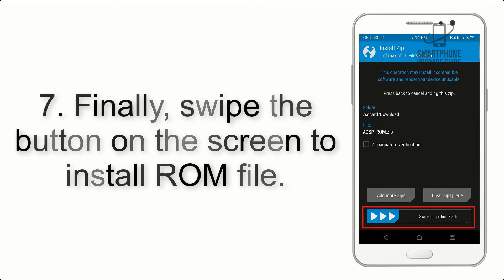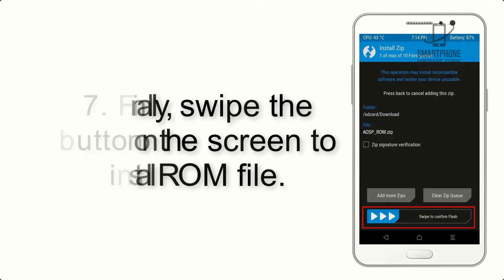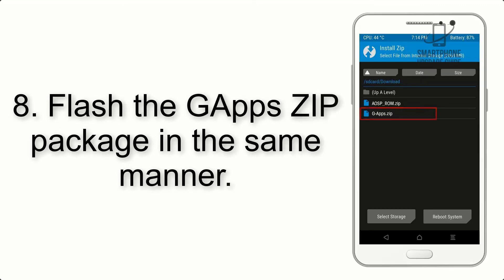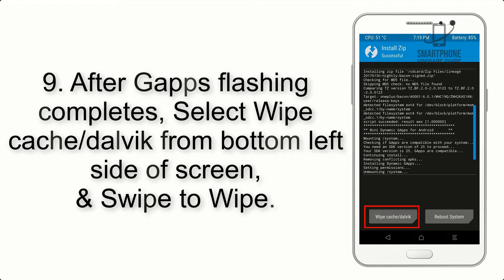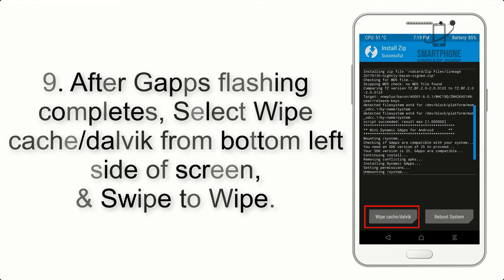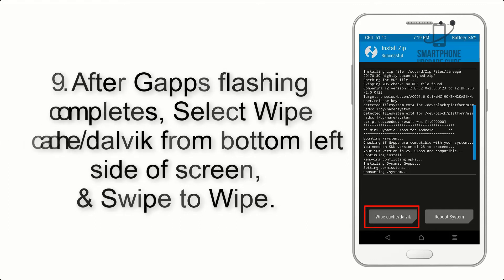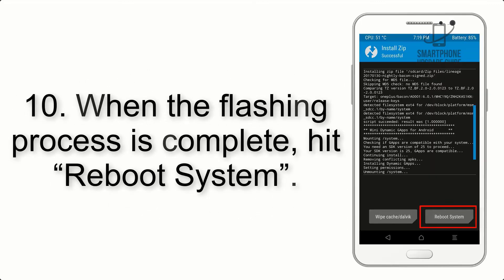Step 7: Swipe the button on the screen to install the ROM file. Step 8: Flash the GApps zip package in the same manner. Step 9: After GApps flashing completes, select Wipe Cache and Dalvik from the bottom left side of the screen and swipe to wipe.